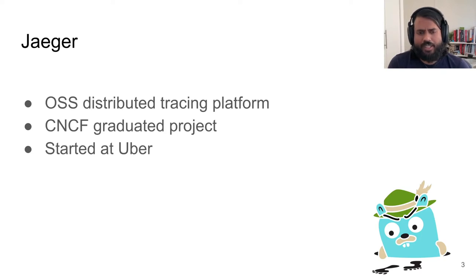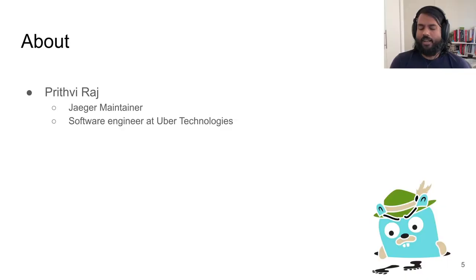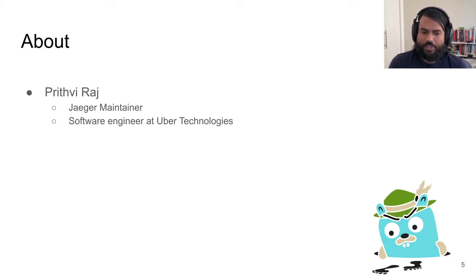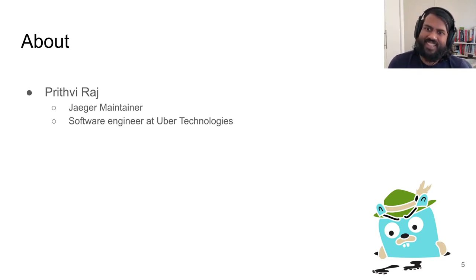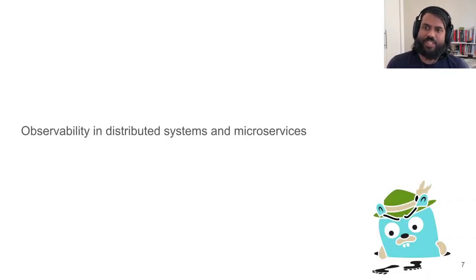Who am I? I'm Prithviraj, a Jaeger maintainer. I've been working with Jaeger since 2015 or so and I continue to work with Jaeger at Uber. Sadly, most of the work I do these days is specific to Uber so I'm unable to contribute to open source. I'm going to start by talking about observability, distributed systems, and microservices.